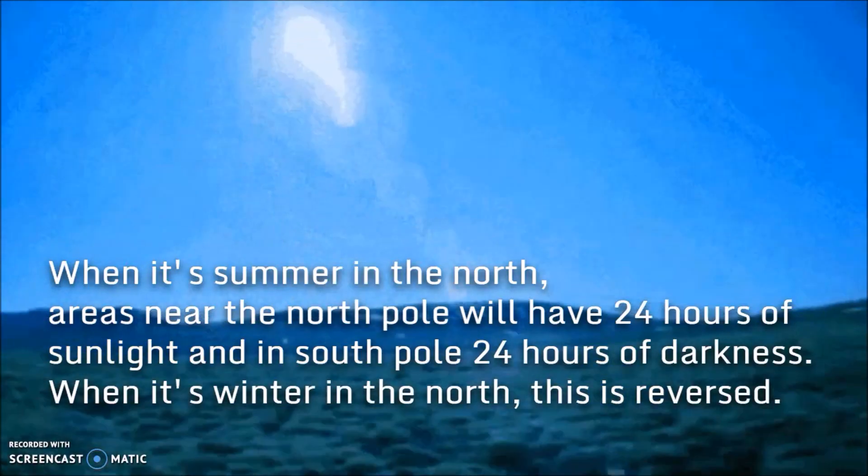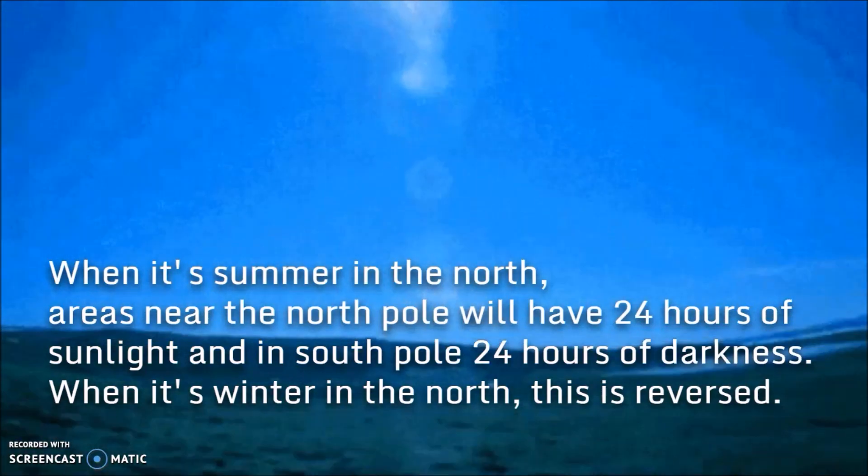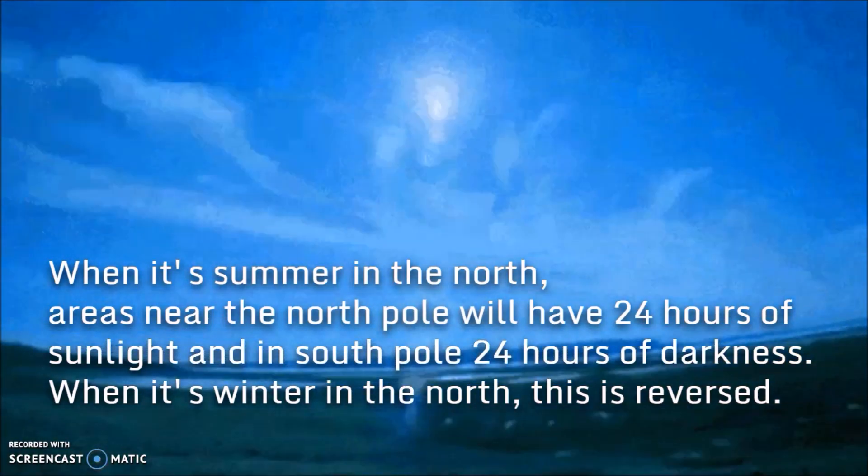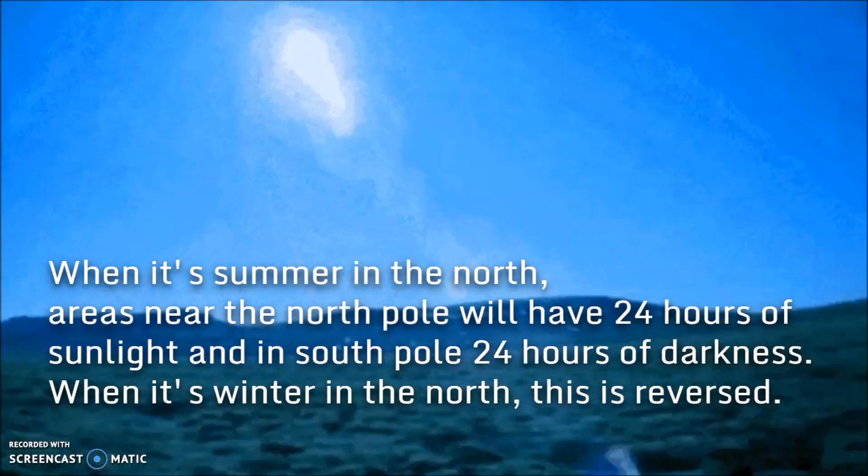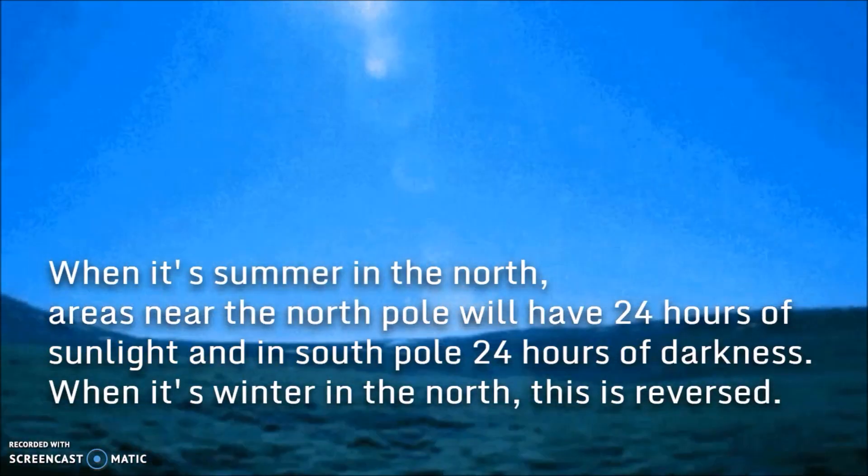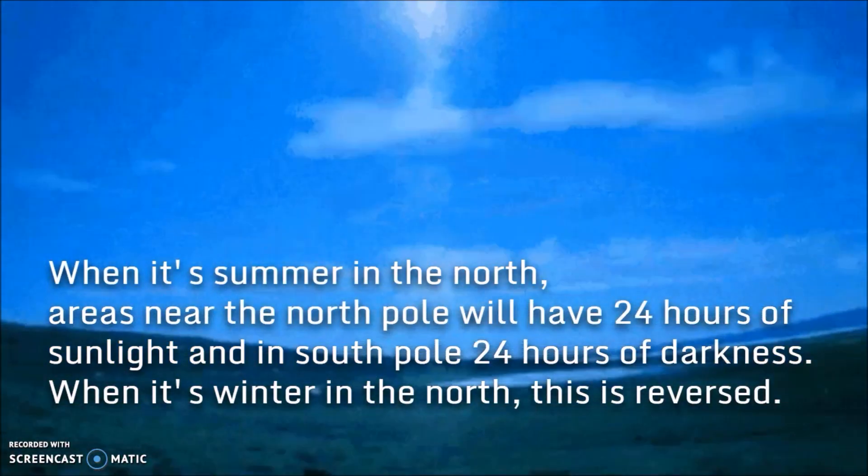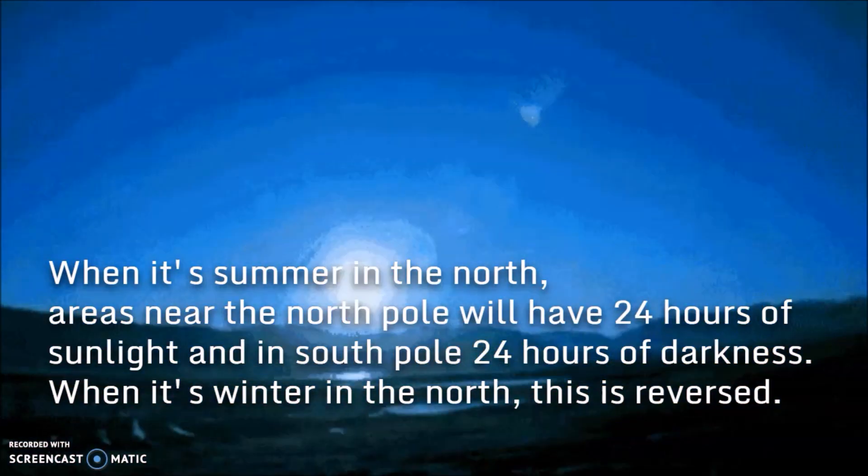When it's summer in the north, areas near the North Pole will have 24 hours of sunlight, and in the South Pole, 24 hours of darkness. When it's winter in the north, this is reversed, and in the North Pole you're going to have 24 hours of darkness, and in the South Pole, 24 hours of light.